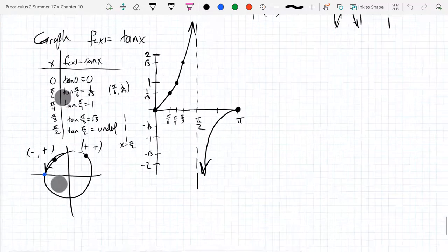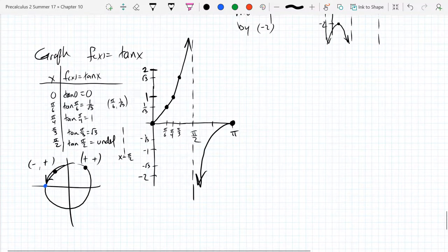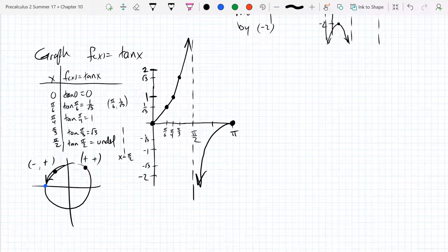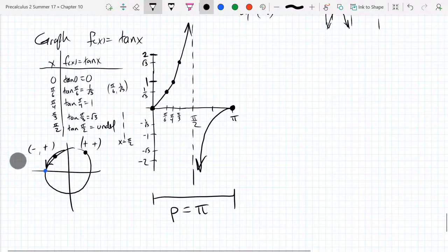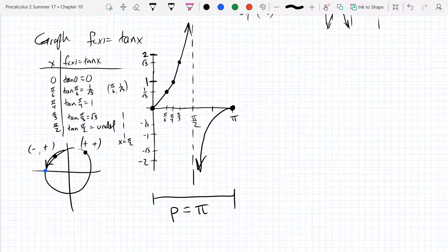Not completely to scale, but that's good enough for us. So this is our one period of tangent. That's only one period. Tangent and cotangent have different periods than sine and cosine. So tangent and cotangent have period of pi.